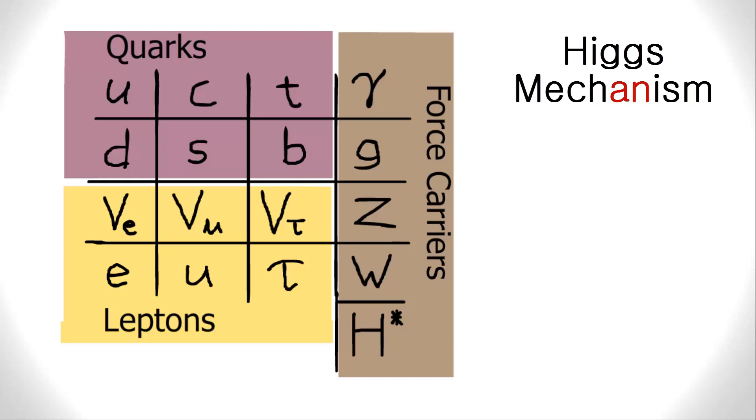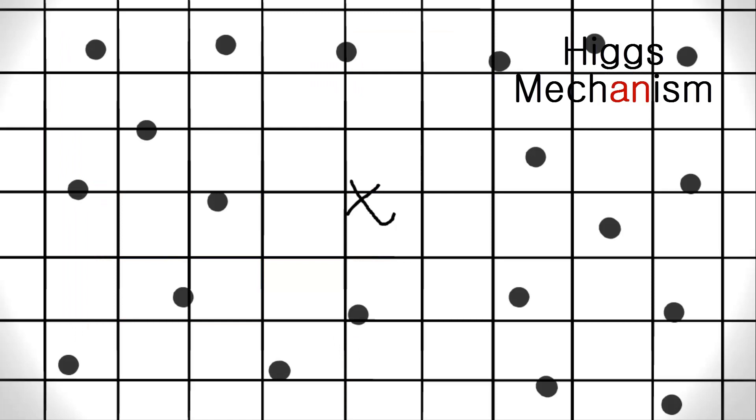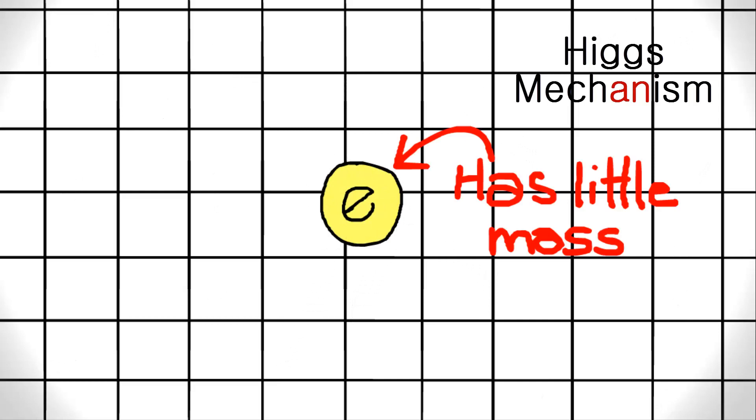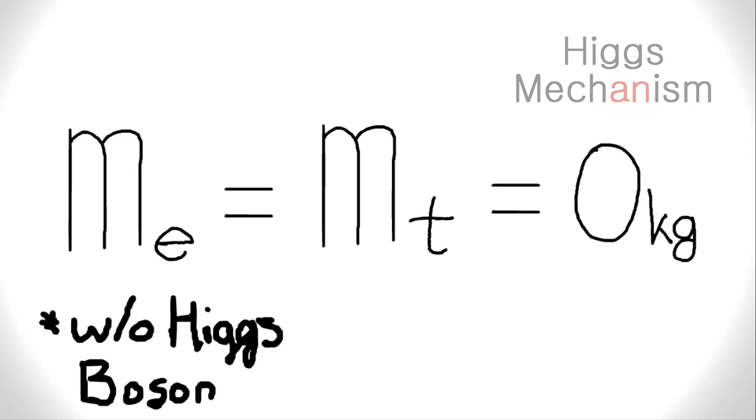When there is a lot of interactions, then the particle gains a lot of mass. If there is little interaction, then the particle doesn't gain much mass. Without the interaction, all particles are the same, massless. When the field interacts, it gives particles mass. This is the basis for the Higgs mechanism.